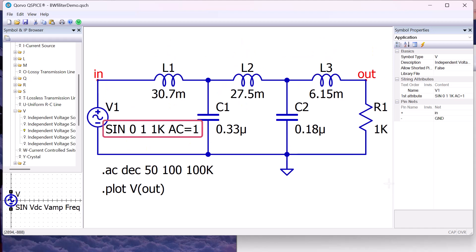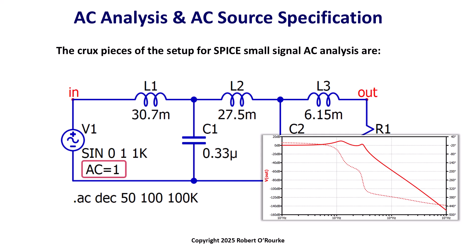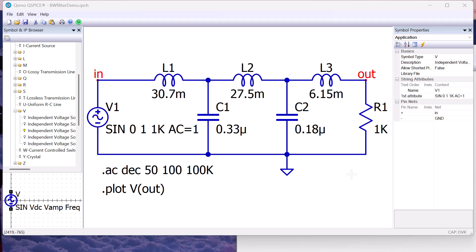Notice how this sine source specification looks different here than in the original setup we saw, which had AC equals 1 on a separate line. We see AC equals 1 in the first attribute in symbol properties.